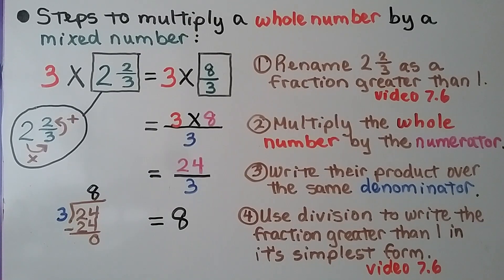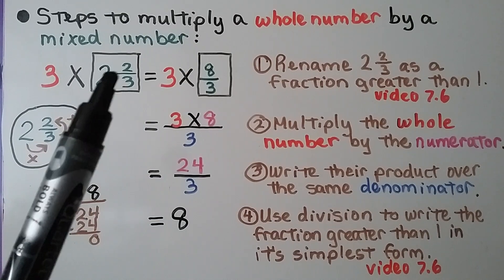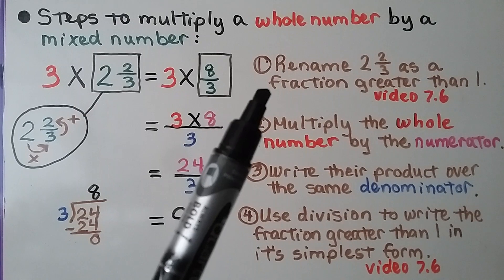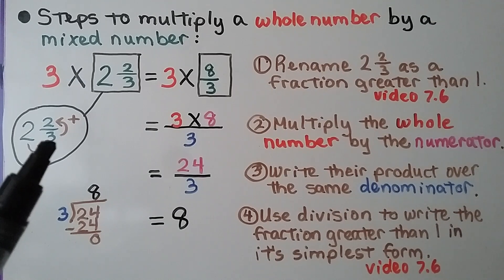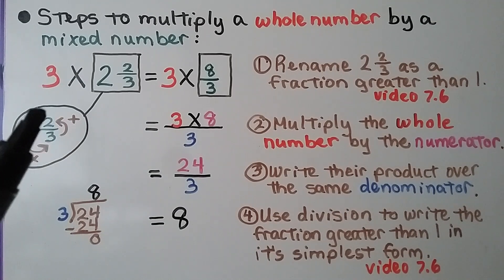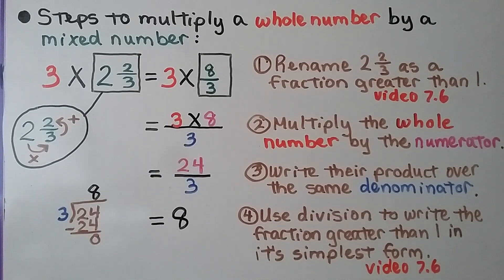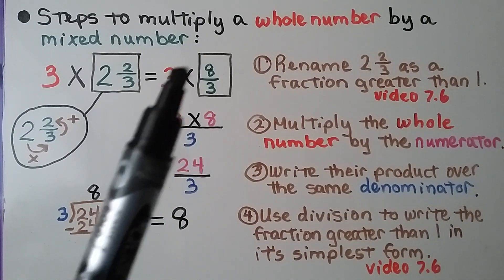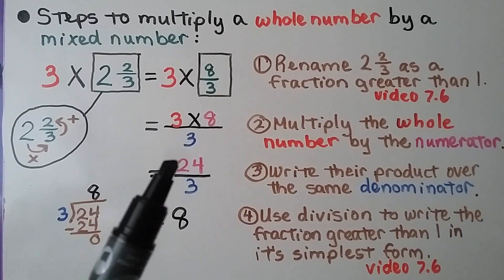Here are the steps to multiply a whole number by a mixed number. We have a whole number 3 that we're multiplying to the mixed number 2 and 2 thirds. The first thing we do is rename the 2 and 2 thirds as a fraction greater than 1. We do it quickly by multiplying the whole number 2 to the denominator — 2 times 3 is 6 — then we add the numerator. We do multiplication then addition: 2 times 3 plus 2. That gives us an 8, and we write it over that same denominator 3. We have 8 thirds. The next thing we do is multiply the whole number to the numerator — 3 times 8, written over that same denominator — that gives us 24 thirds.